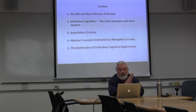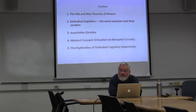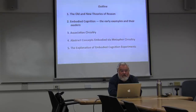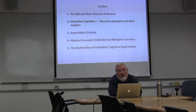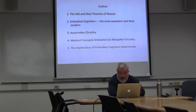I want to start with an outline of old and new theories of reason — theories from the 17th century and 21st century theories of reason — then go on to embodied cognition, the early examples from the 1970s and how we would explain them today. I'll talk about neural circuitry, association circuitry linking embodiment to language and gesture, how abstract concepts are embodied via metaphor circuitry, and an explanation of embodied cognition experiments, which have become very popular around the world.